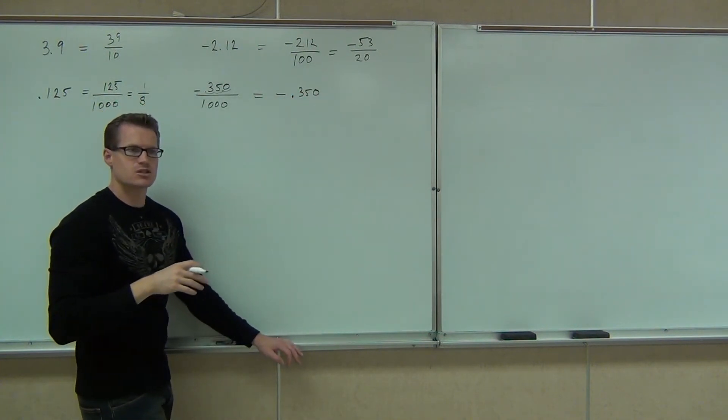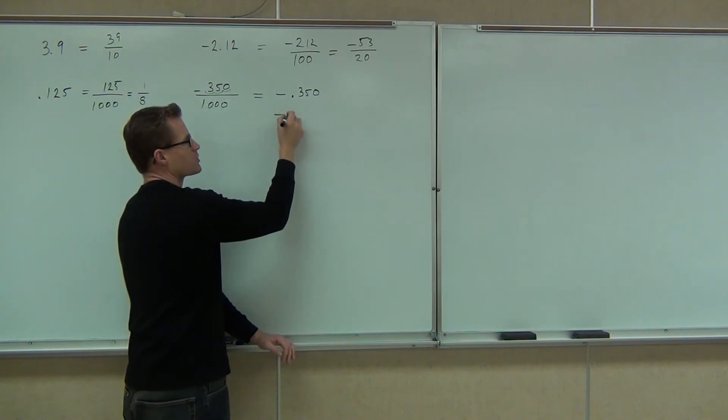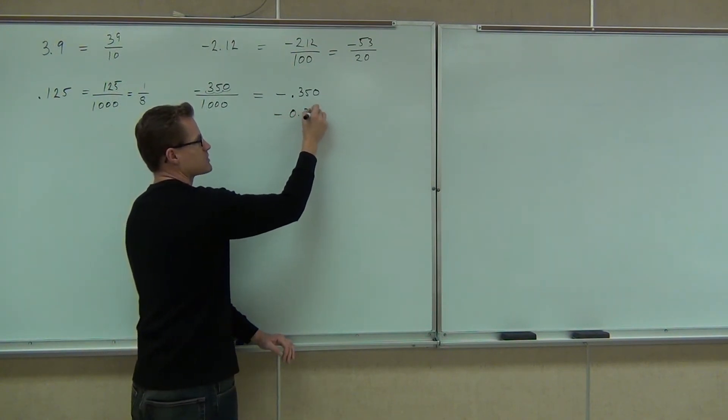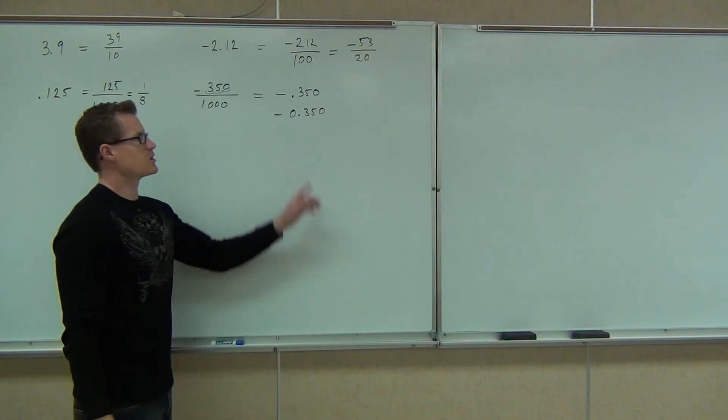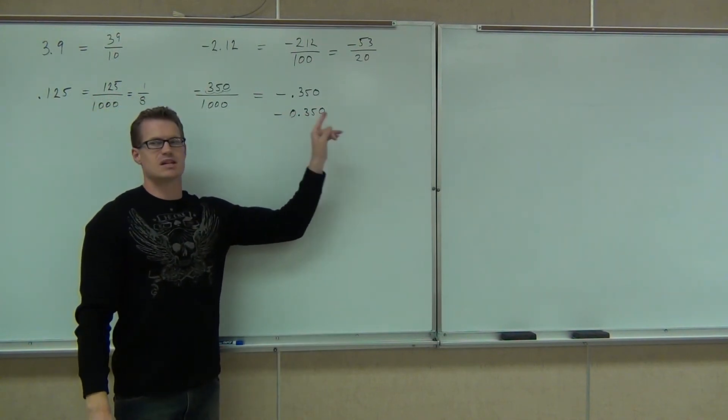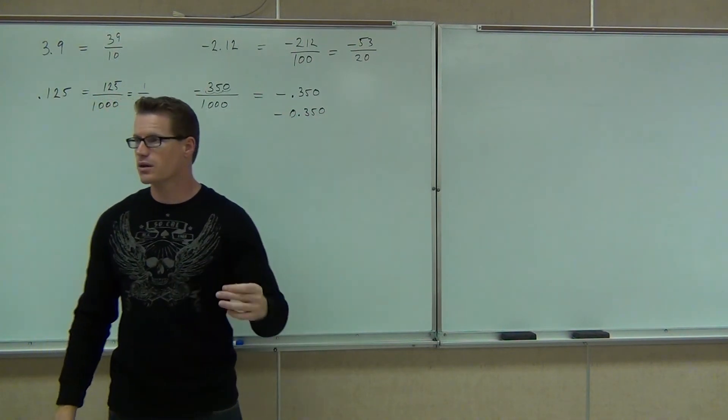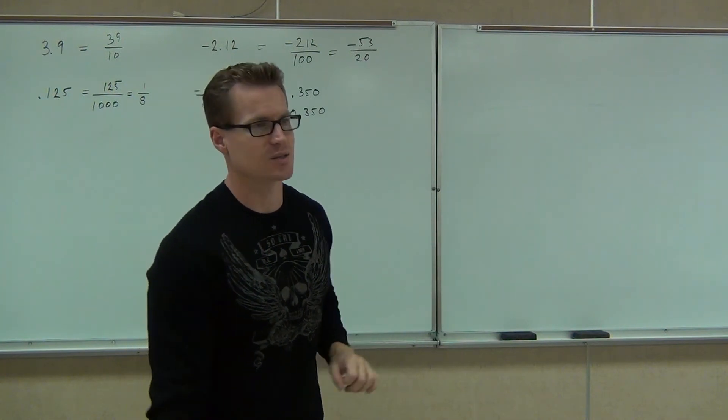0.350. Or another way to write this, if you'd like to show the zero up front, it's appropriate to write negative 0.350. Why people do that is so that you understand that that first zero means there's a decimal place right after it. So you've got to look at that and say, oh, I get it. I'm not going to misplace that decimal.